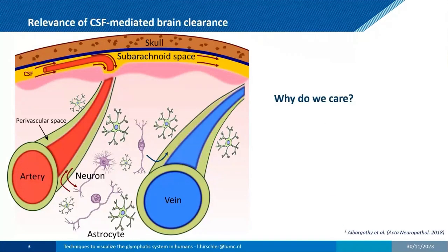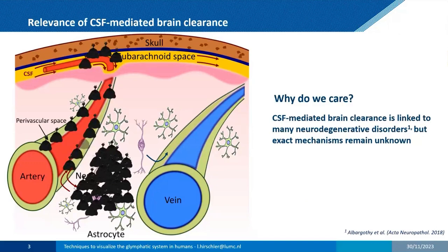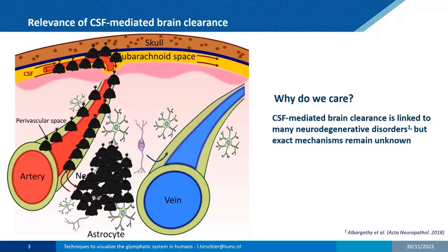Why do we care about these mechanisms? There is increasing evidence that CSF-mediated clearance is impaired in many diseases — for example in amyloid beta accumulation in brain tissue, and in cerebral amyloid angiopathy where waste accumulates in the vessel walls of arteries. Understanding how this clearance mechanism works could help understand these diseases and potentially find strategies to treat them.